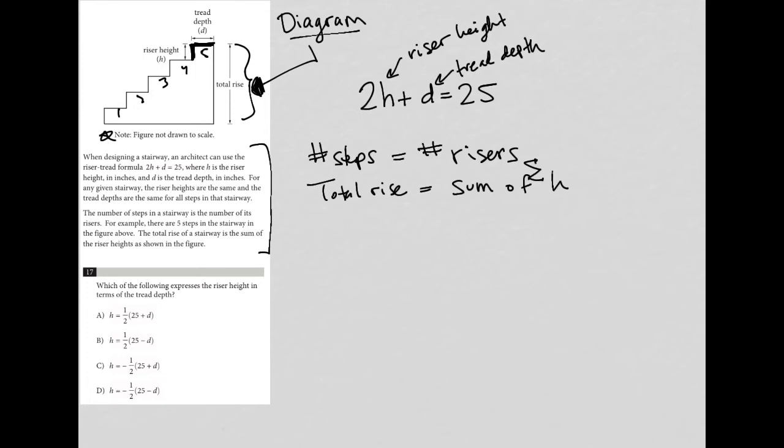So question 17 says, which of the following expresses the riser height in terms of the tread depth? So all of this becomes not as important as a focus on the actual formula itself.